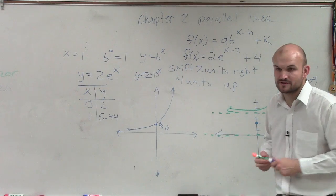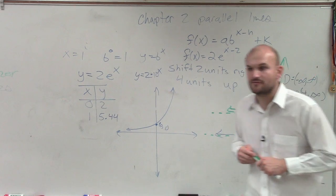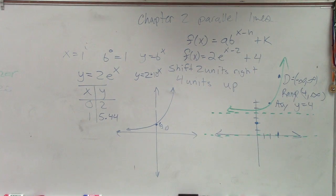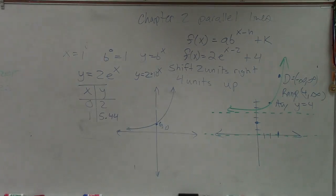Asymptote is going to be a line that the graph is going to approach. If we talked about, I'll go ahead and do a quick little example. I did this for another class. But ladies and gentlemen, when looking at...